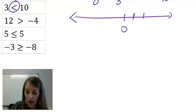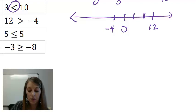So I'm going to go 4, 8, 12, and then negative 4 here. I can see that 12 is to the right of negative 4 on the number line. So 12 is greater than negative 4 on the number line.